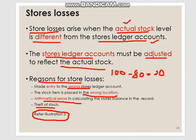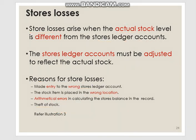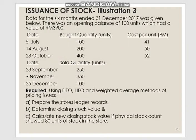Next, we are going to refer to Illustration 3, where we will explain in detail how to do the calculations for issuance of stock based on the three methods: FIFO, LIFO, and weighted average method. Please see the next video. Thank you.